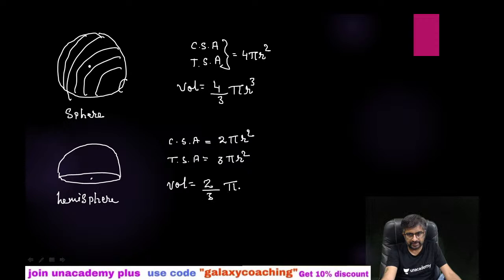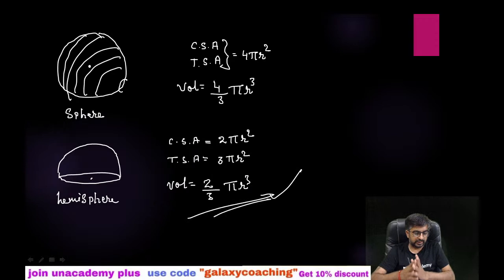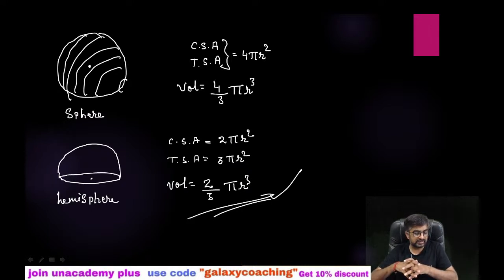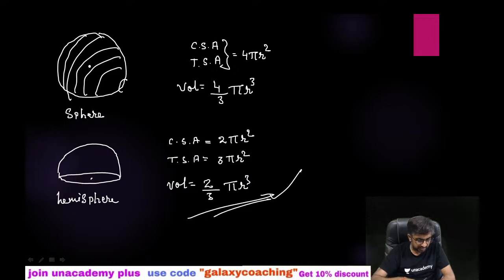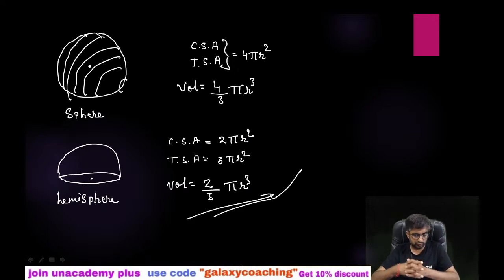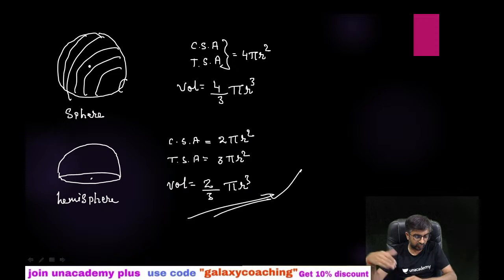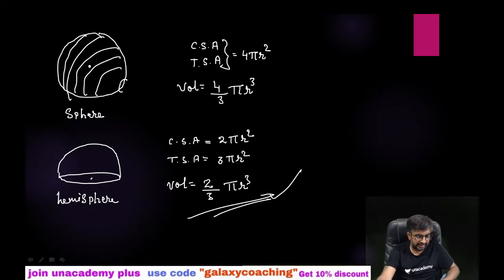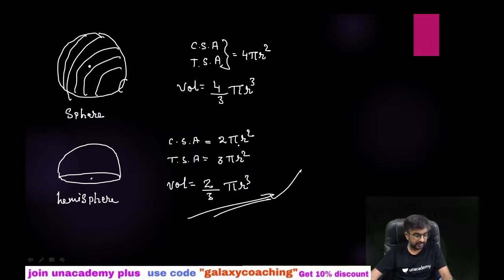So these are all the formulas for surface area and volume. Frustum of cone was removed from the syllabus this year so I'm not explaining that. If you like this, please subscribe to my channel. I'll give you the link to my WhatsApp group and Telegram group in the description so you can join, share doubts, and exchange study material. I'm also taking free live lectures on an academy — my code is galaxy coaching. Thank you so much for being with me!